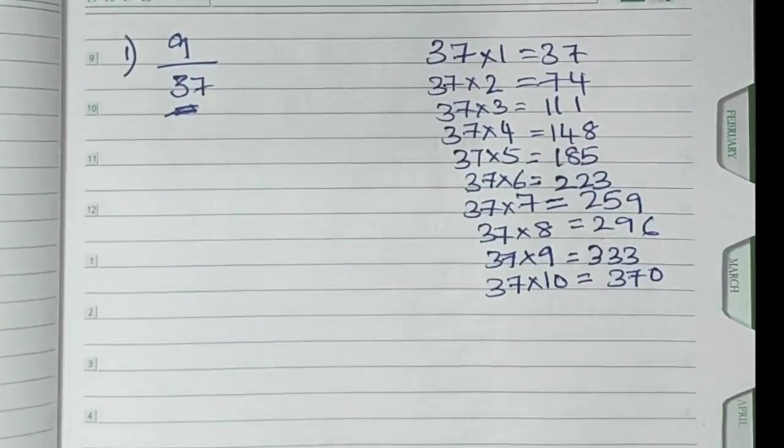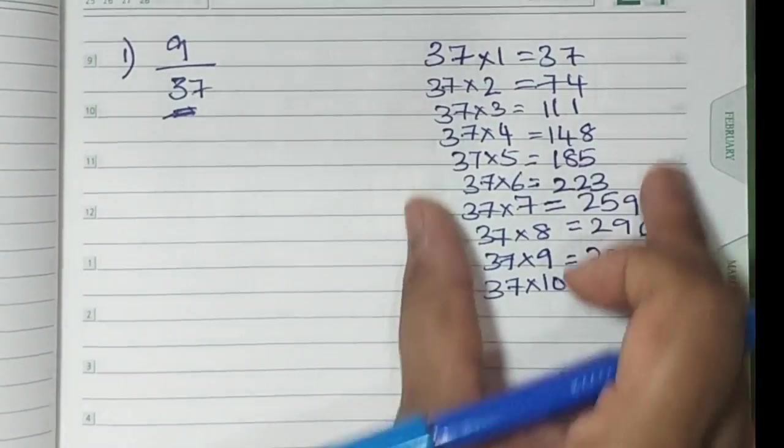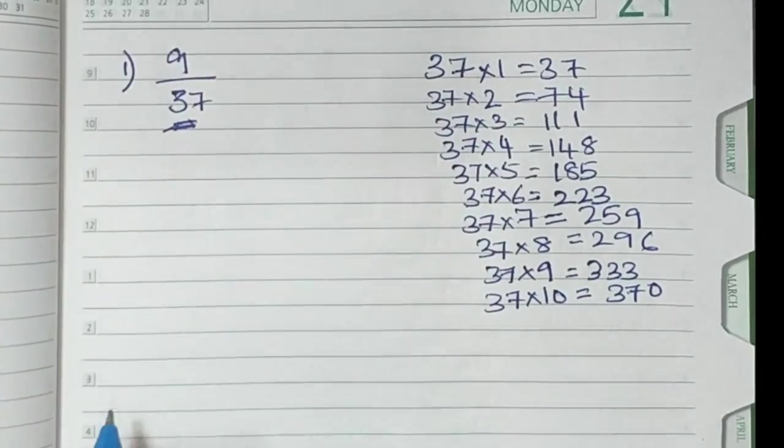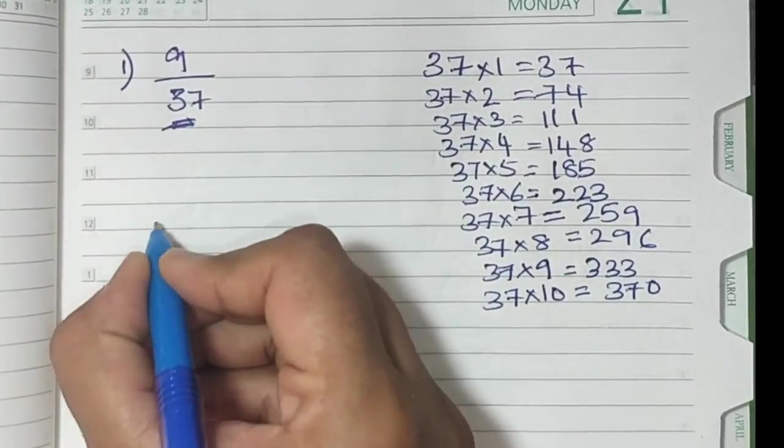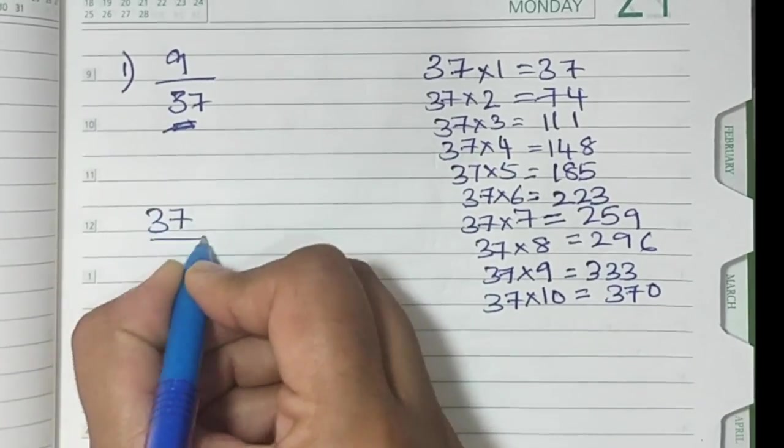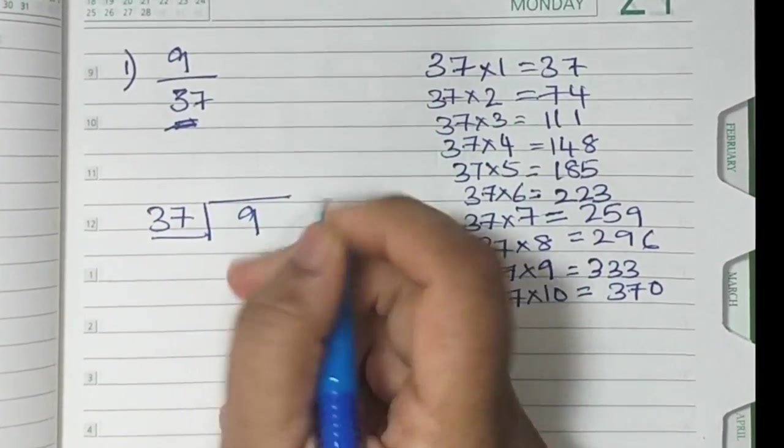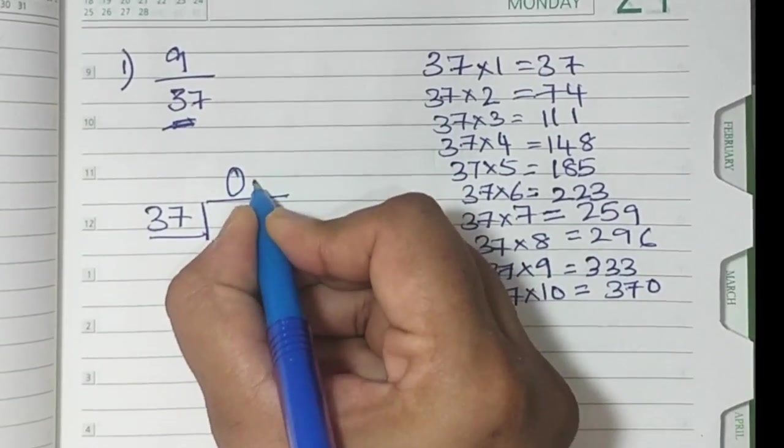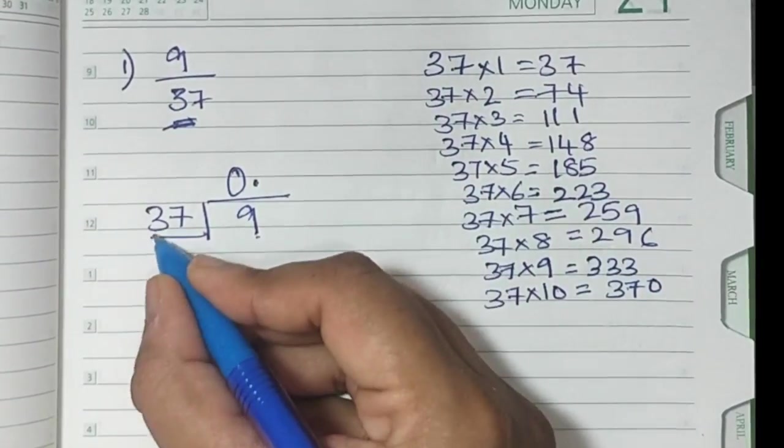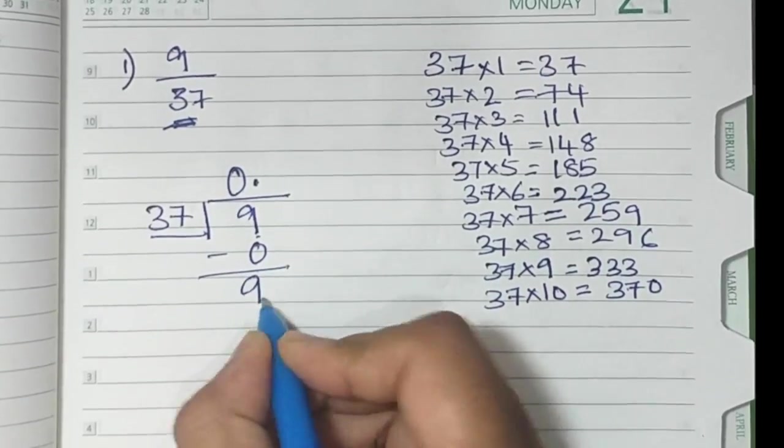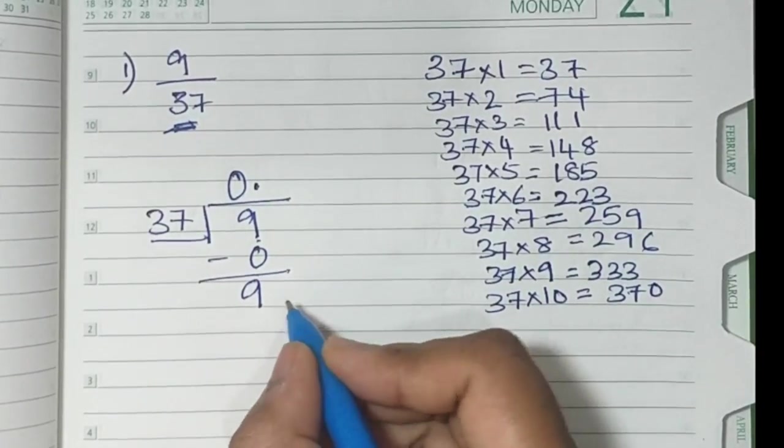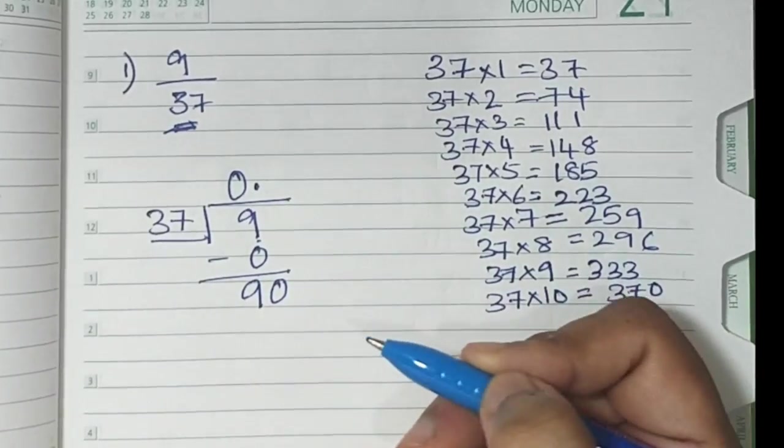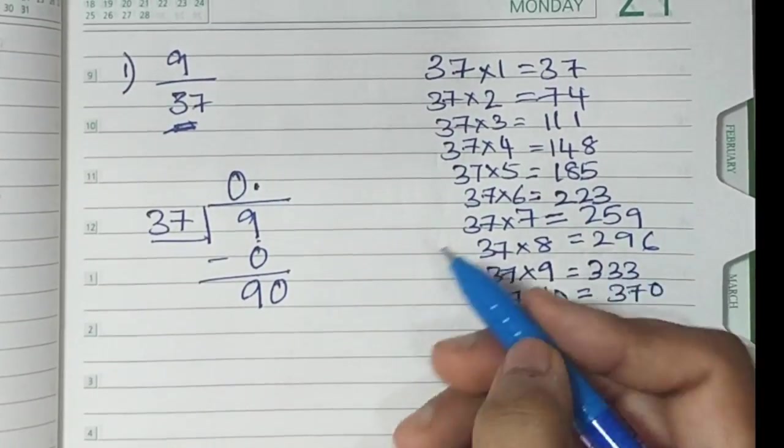Once you have your table on the side, this becomes easier. For smaller numbers, you can do it directly. But for bigger numbers, you write the table on the side. Or as when you are dividing, you can do it that time also, but I feel this is better. We start writing this rational number in decimal form. What you do is 37, you divide 9 by 37. Since 9 doesn't go, we have to put 0 and point first. 37, 0 is 0, your 9 comes down as it is.